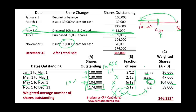If my math is right, the weighted average number of shares outstanding is 246,332. The most challenging part of computing earnings per share is how to compute the weighted average number of shares outstanding — the denominator. In the numerator, you have net income applicable to common shareholders, which is net income minus preferred dividend — pretty straightforward. The denominator is what gives students some problems, especially when you have stock splits and stock dividends. I showed you the rules to compute the weighted average number of shares outstanding.